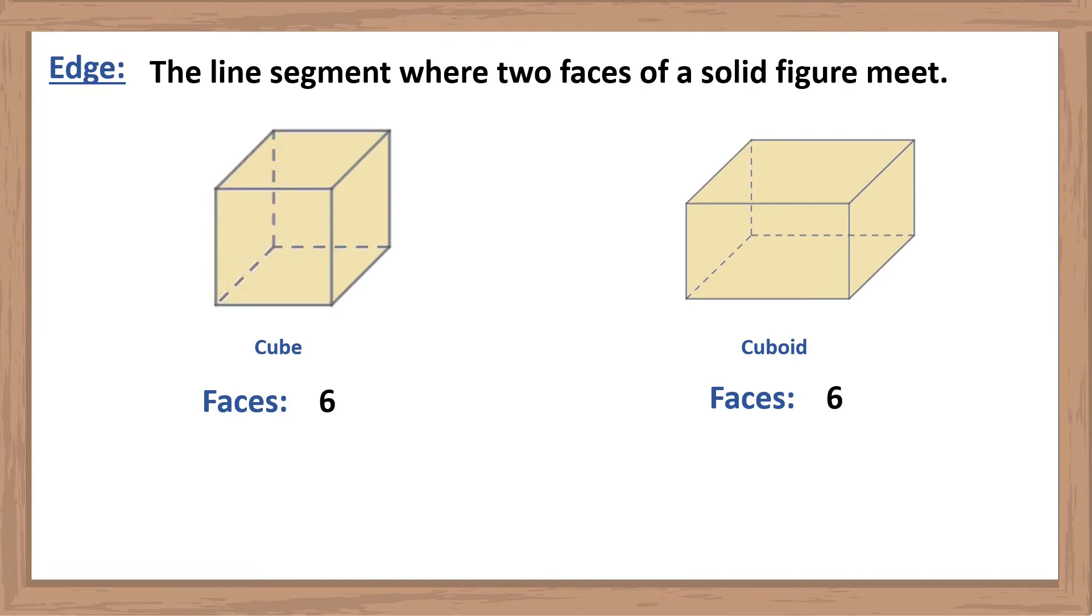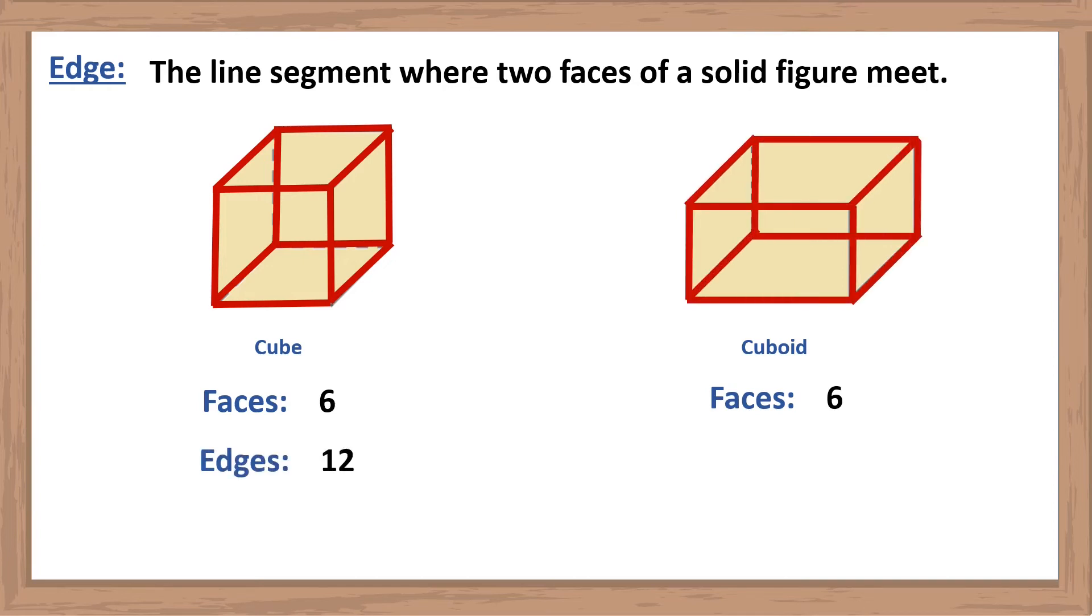Let's count the number of edges in a cube. One, two, three, four, five, six, seven, eight, nine, ten, eleven, twelve. Thus cube has 12 edges. Cuboid also has 12 edges.